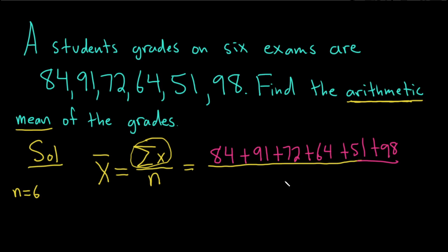And then we divide all of these by 6. So if you put this in your calculator and add up all of these numbers, you'll get 460. Then we still have the 6 on the bottom. And this is actually 76.6 and it repeats.